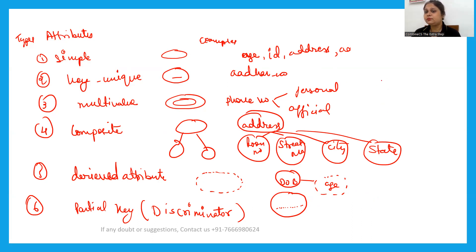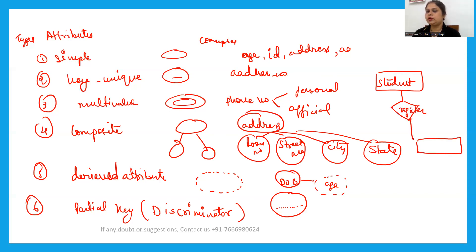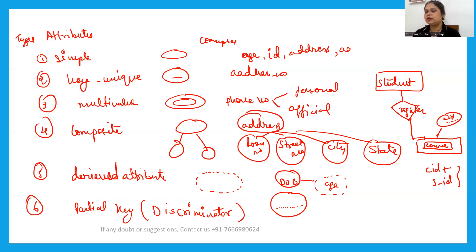A partial key is used when representing a weak entity. A weak entity cannot have its own primary key because it is dependent on a strong entity. For example, consider a student who registers for a course — course registration can be a weak entity. The course ID acts as the discriminator, or partial key, and the full primary key becomes course ID plus student ID combined.